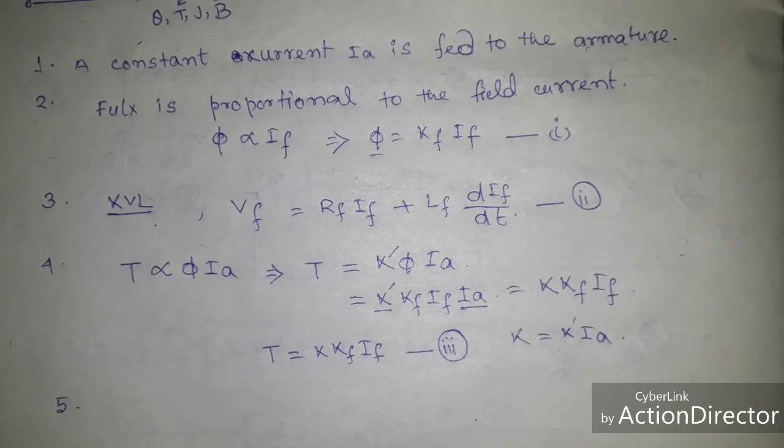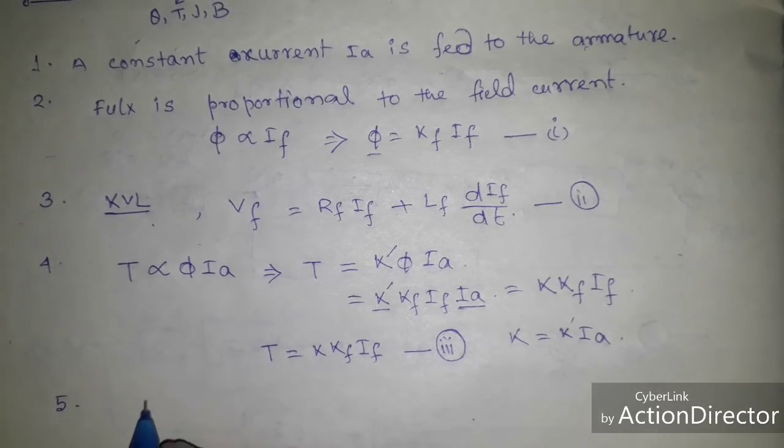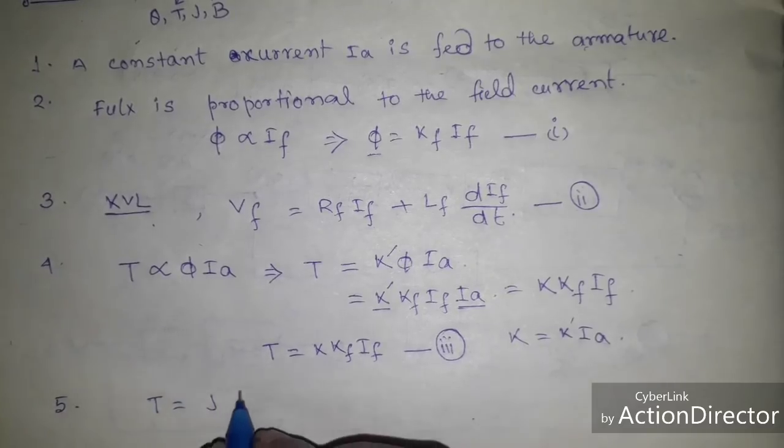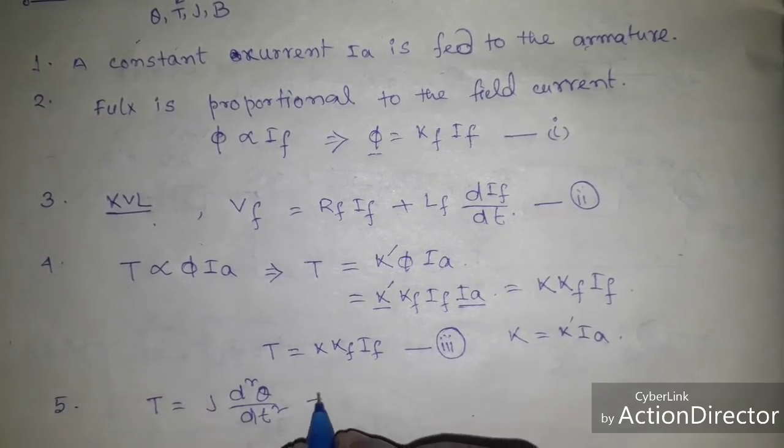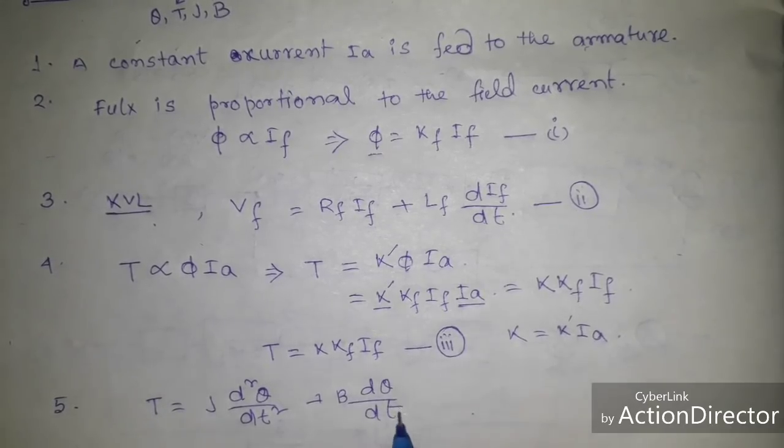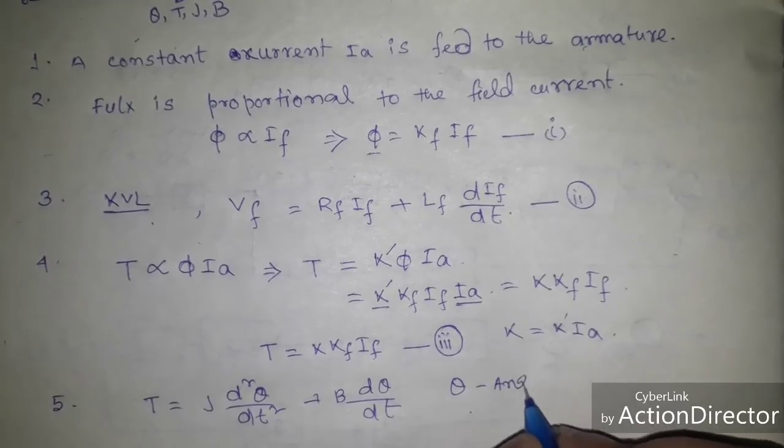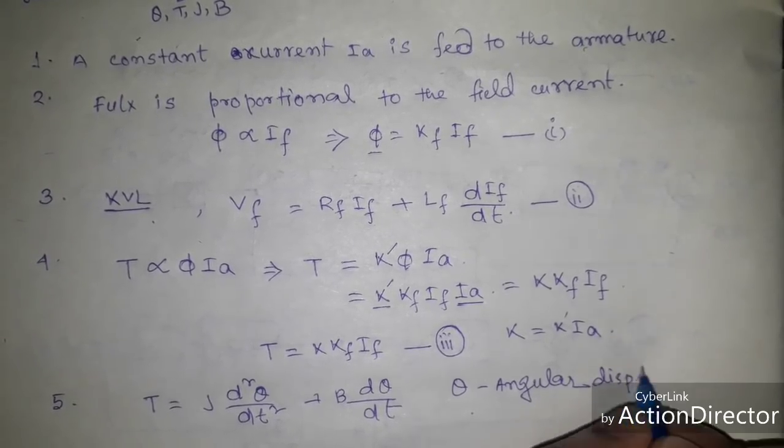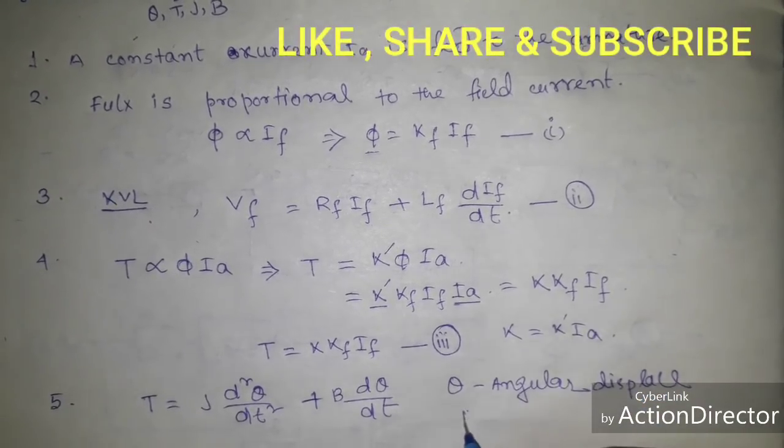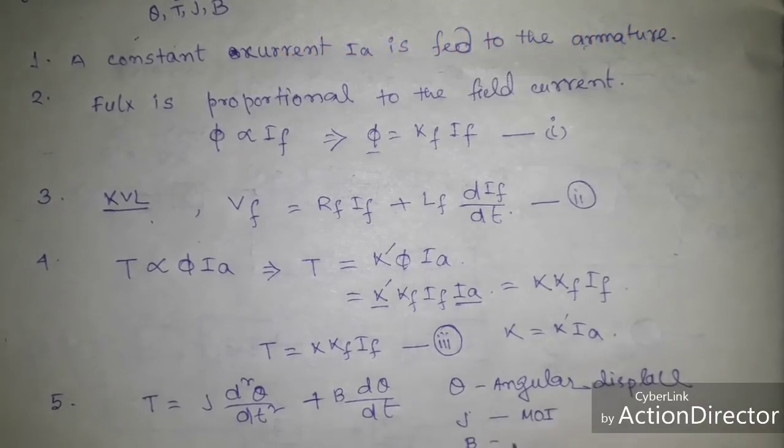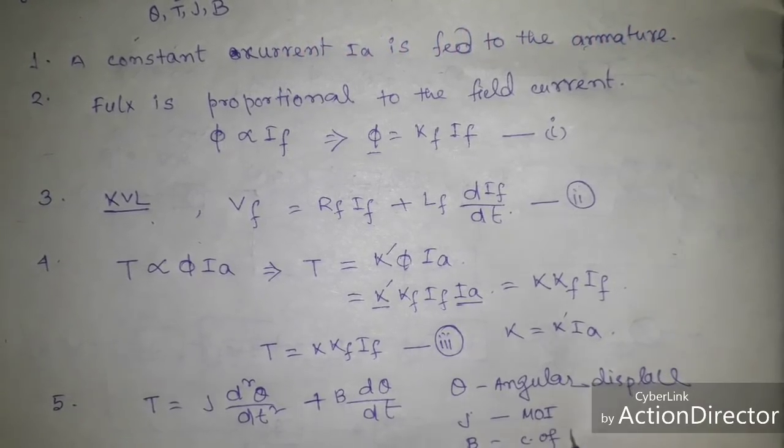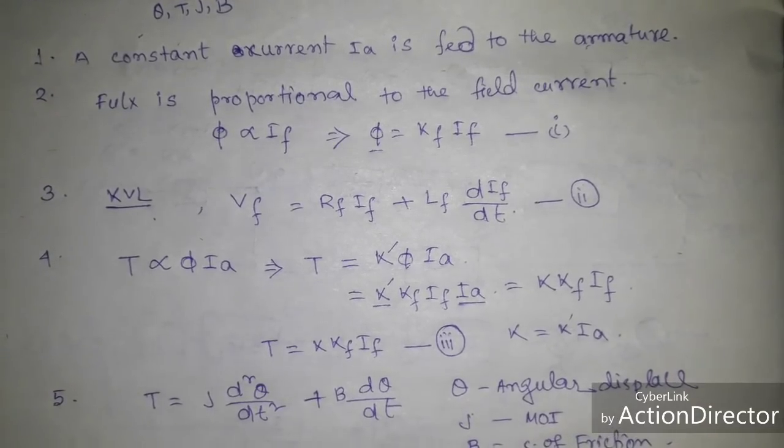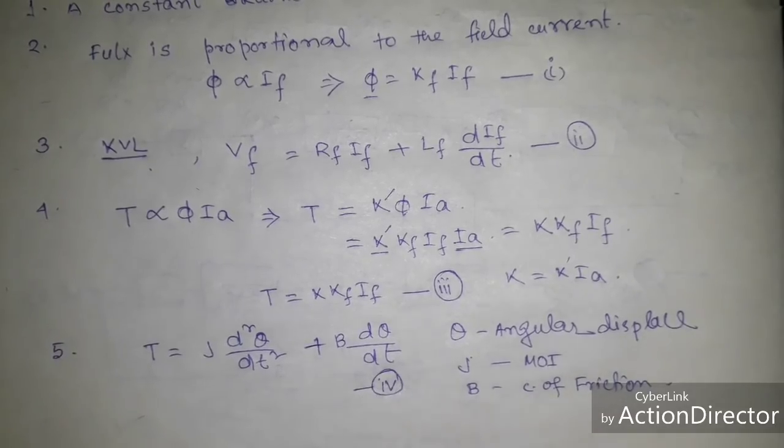Now we use the dynamic equation of torque in terms of J and B, where J is the equivalent moment of inertia of motor and B is the equivalent coefficient of friction of motor. So we write the dynamic equation T equal to J d²θ by dt² plus B dθ by dt, where θ is the angular displacement. And I already told that J is the moment of inertia and B is the coefficient of friction. So this is equation 4.